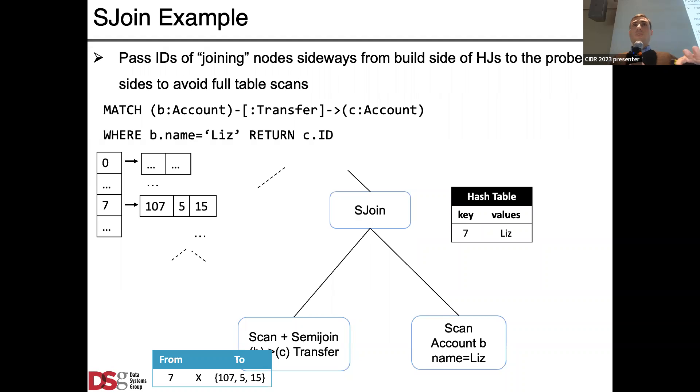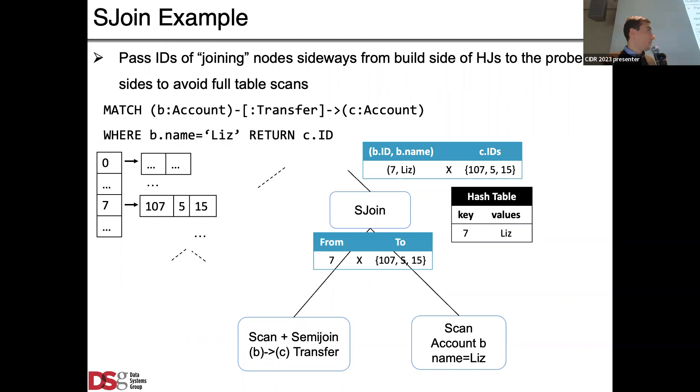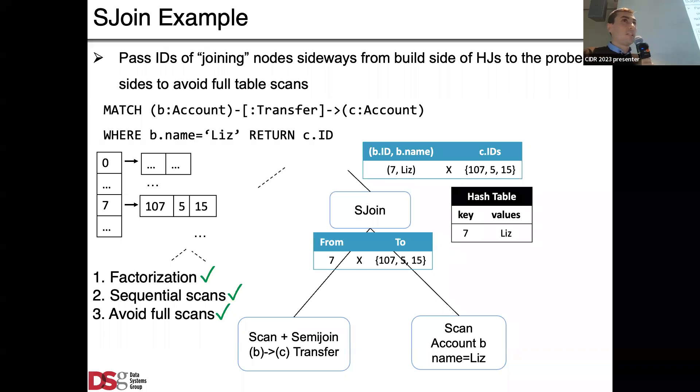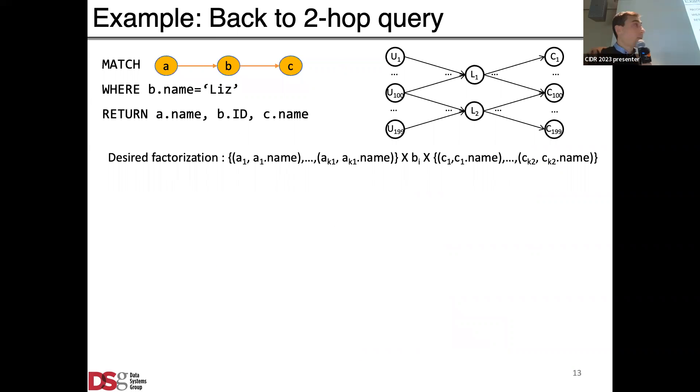Because we have CSR structures we can scan data in factorized form, all outgoing edges of seven, but only the part that's relevant. This is used as a zone map to skip over pages of this transfer edge file. We can join seven with Liz all in factorized form. This achieves the three design goals, but there are actually cases where if you wanted to keep this factorization structure but instead wanted to join with c.ID where you can't really keep the same factorization structures, then you'd have to flatten c.IDs.